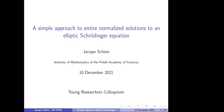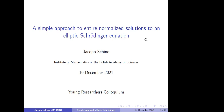Let me start by saying that this is a rather long title, but the first aim for me is to explain all the concepts that you might not be familiar with. So, what is the Schrödinger equation? What is, in particular, the elliptic Schrödinger equation? What does "entire solution" mean? What does "normalized solution" mean? So, let's get started.